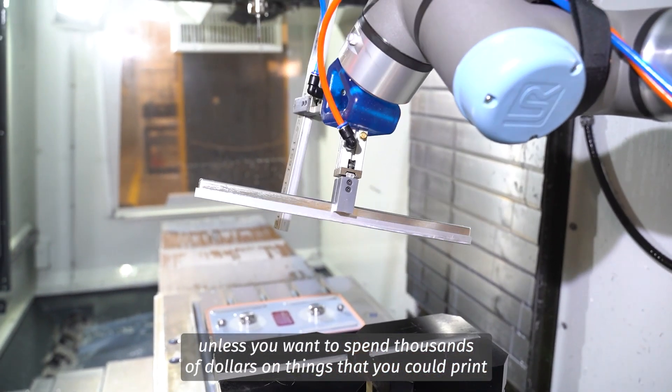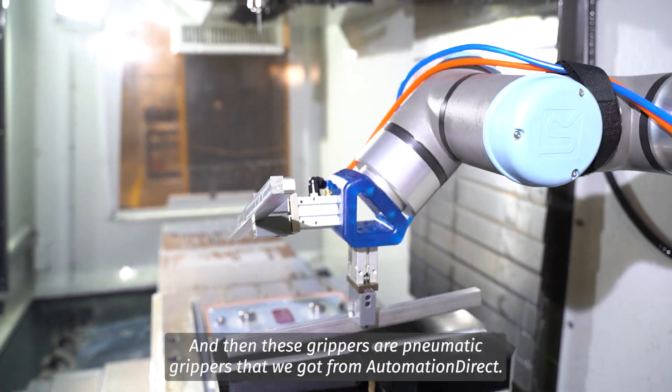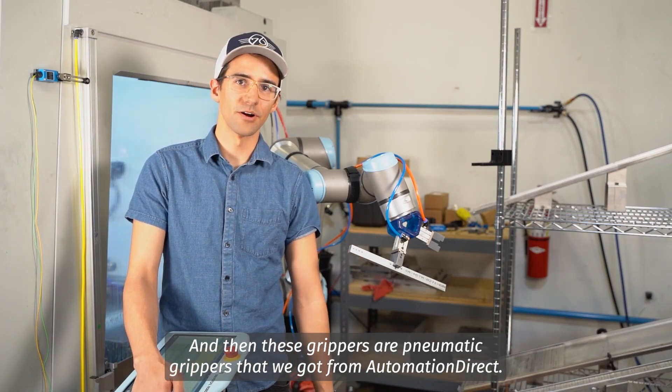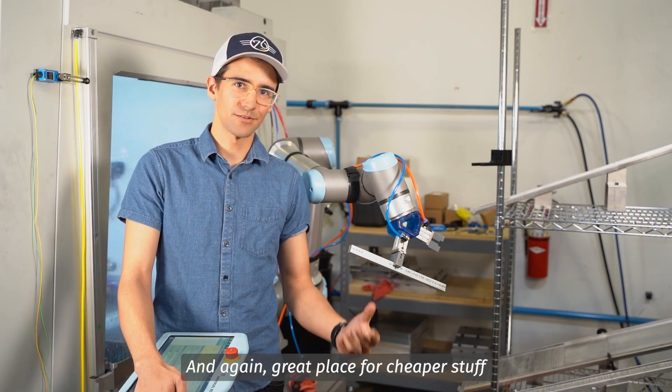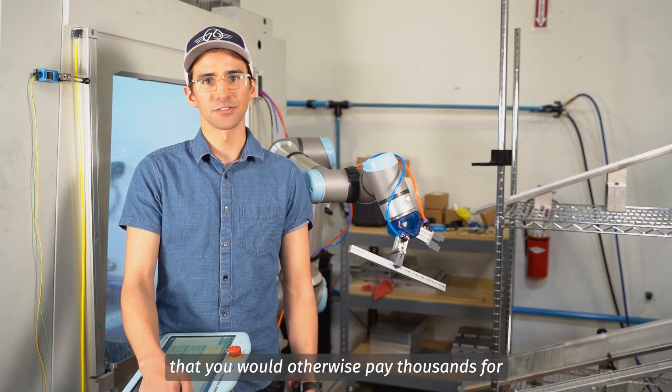When it comes to this automation stuff, having a 3D printer is pretty much essential unless you want to spend thousands of dollars on things that you could print in your own shop. And then these grippers are pneumatic grippers that we got from Automation Direct, and again, great place for cheaper stuff that you would otherwise pay thousands for.